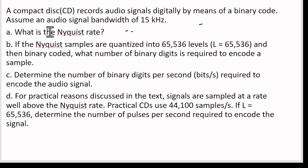Hello and welcome to my channel. Let us solve this problem which is related to communication systems and digital communication — specifically PCM, pulse code modulation. The question says that a compact disc records audio signals digitally by means of a binary code. Assume an audio signal bandwidth of 15 kilohertz, so B is equal to 15 kilohertz.